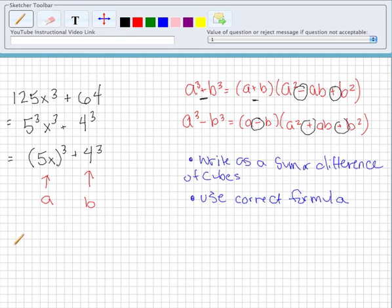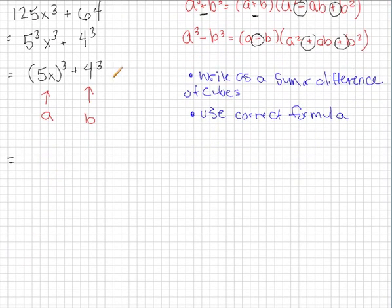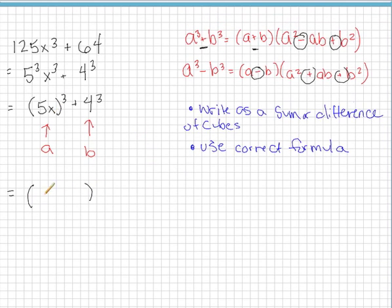So now that we've identified what A and B are, which is very important, and that's why we rewrite it as a sum of cubes, we can go ahead and just plug and play, basically. So our A is 5X, and our B is 4.